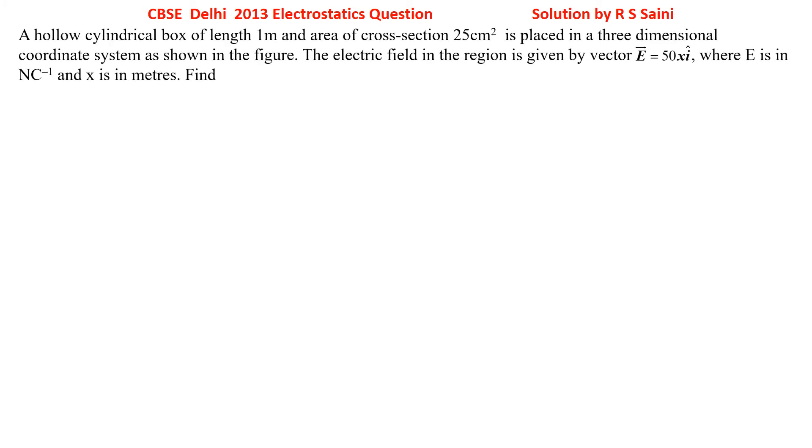A hollow cylindrical box of length 1 meter and area of cross section 25 cm² is placed in 3 dimensional coordinate system as shown in the figure. This is a cylindrical box whose axis is along x-axis.